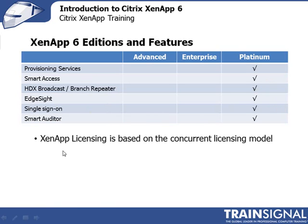It's important to know that the ZenApp licensing model is based on concurrent licenses — not per device, per user, or per named user. If you have a pool of 100 licenses, 1,000 users can connect to those 100 licenses, but only 100 users at a time. Once a user is done with a license, it's returned to the pool and someone else can log in and use it.